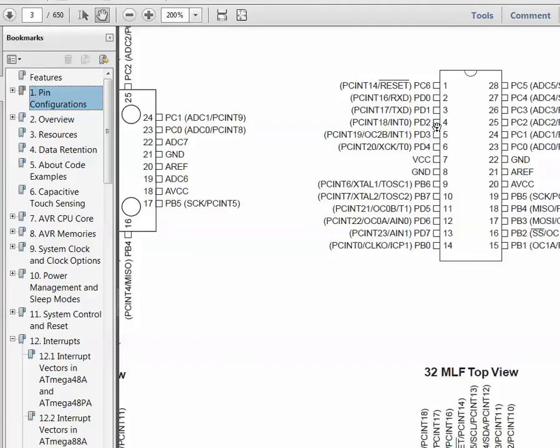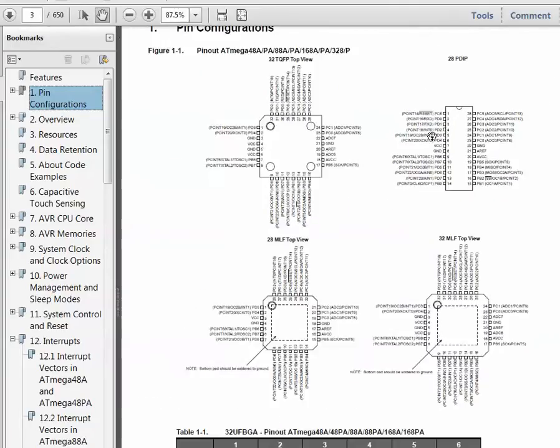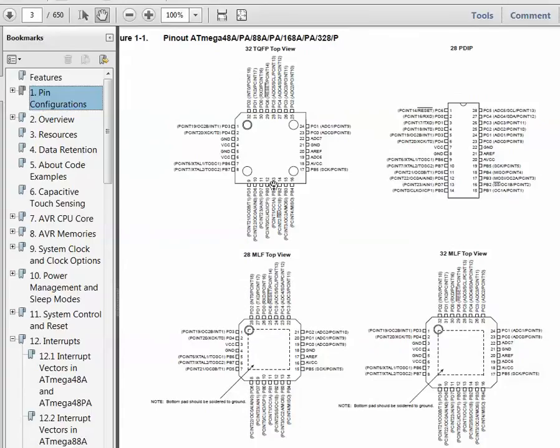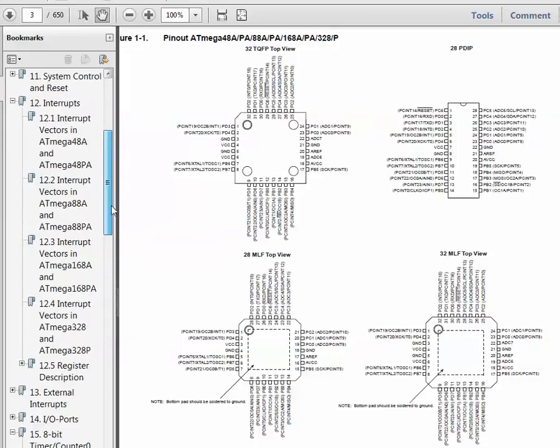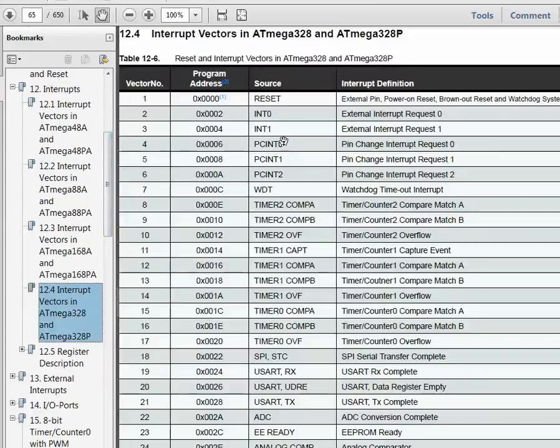If something happens on one of these pins, it can generate an interrupt. That's what we'll use in this example. Coming back down to the interrupt vector table, we see that the vector names are going to be INT0_VECT and INT1_VECT.